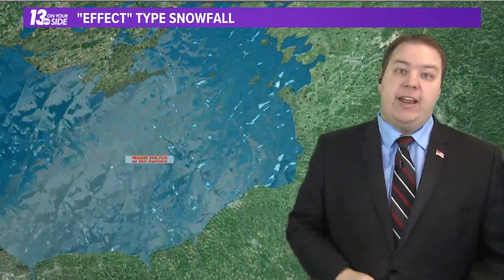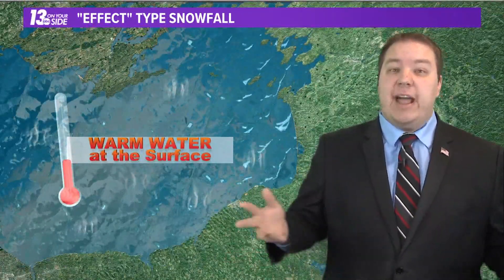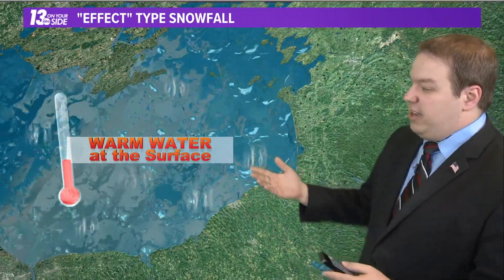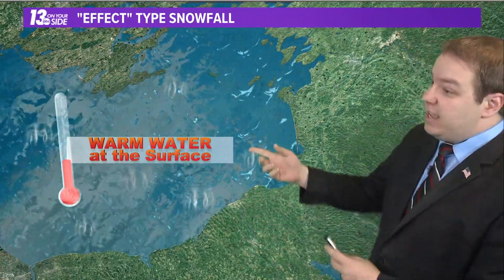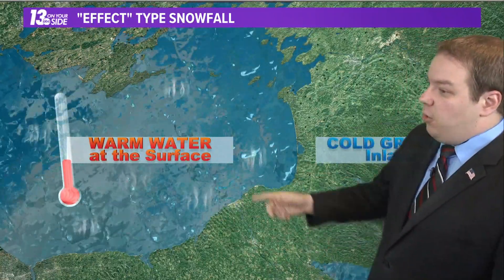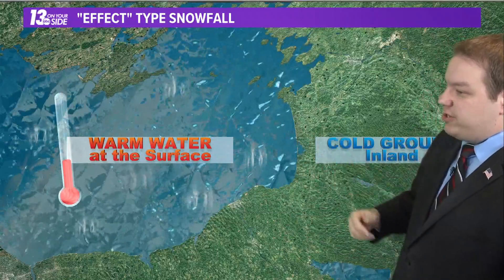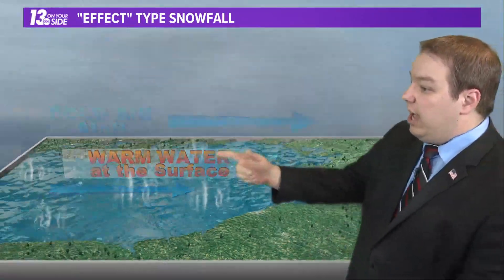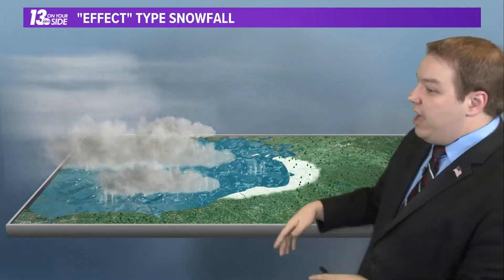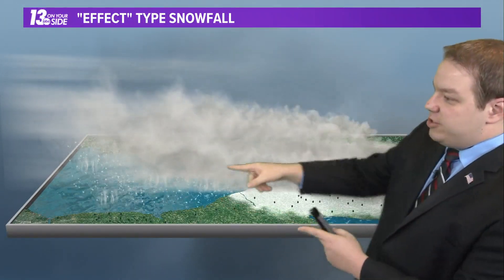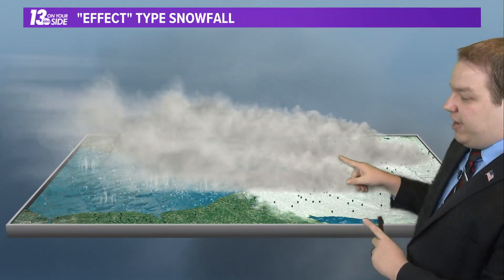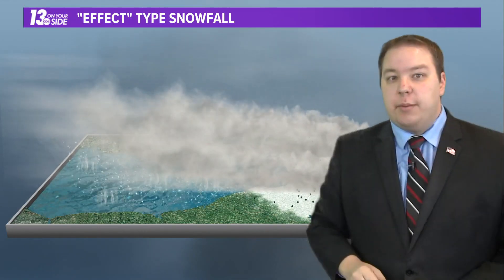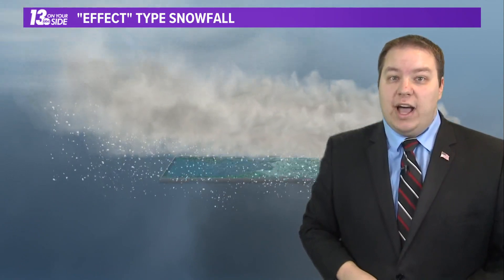Let's go ahead and explain how that happens. There are different types of effect snow across the region. The normal one that we have here across Lake Michigan, West Michigan, is lake effect snow. Warm waters — the moisture rises off of there. Colder ground toward the inland and cold air aloft that flows over that warm water — that generates the cloud cover and generates the lake effect snow. But this type of snowfall can come from smaller sources as well.